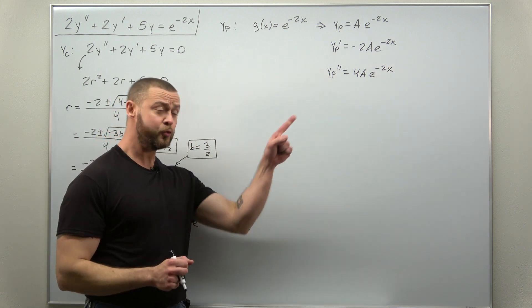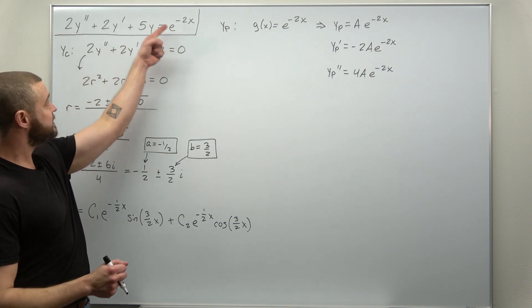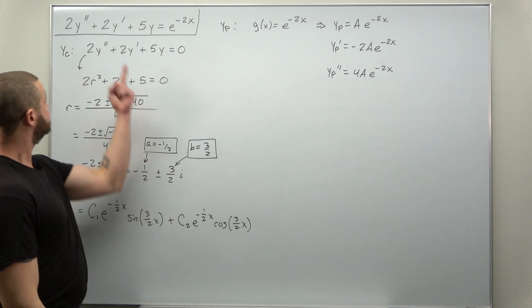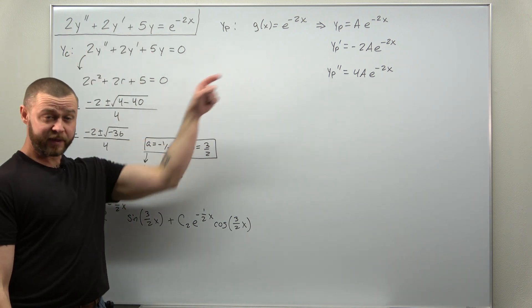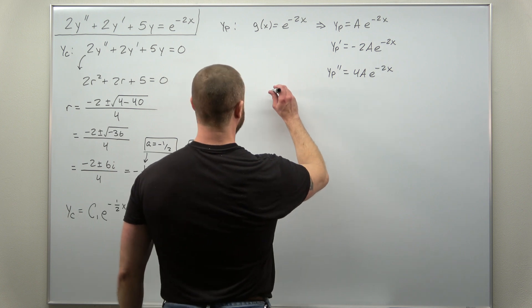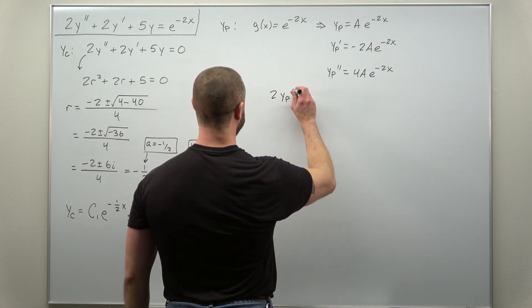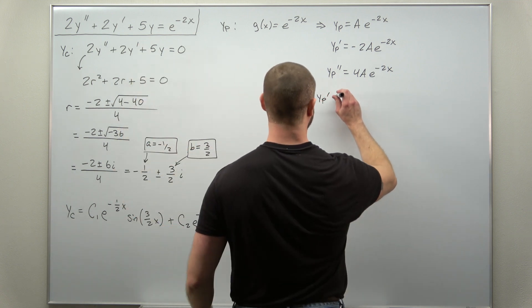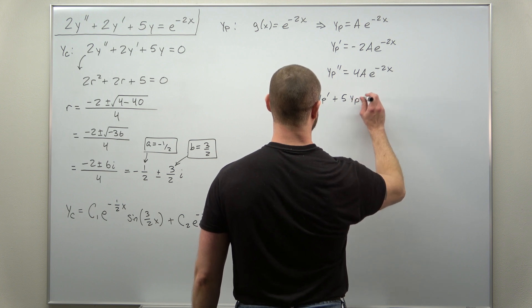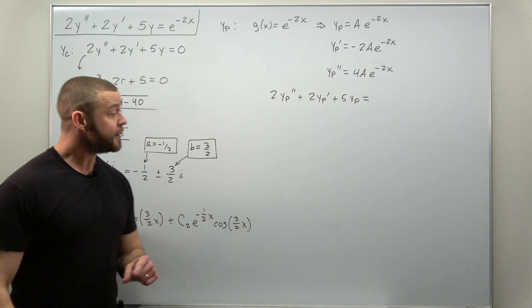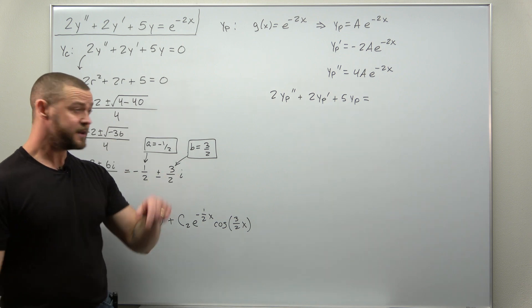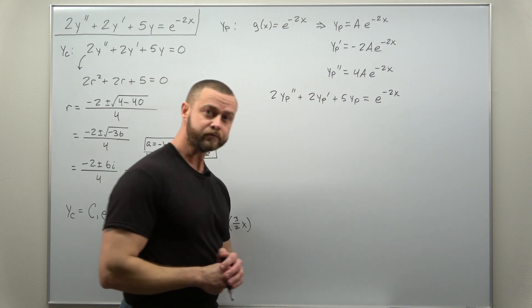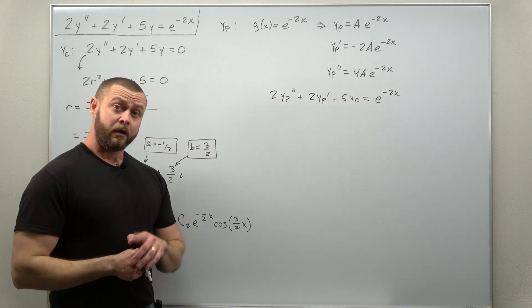So we have everything that we need to plug it all back into the non-homogeneous ODE. We're going to take our time with that. So we're going to replace all y's here with yp. So we'll get 2yp double prime plus 2yp prime plus 5yp. And we need that to all come out to simplify and leave us with e to the negative 2x.